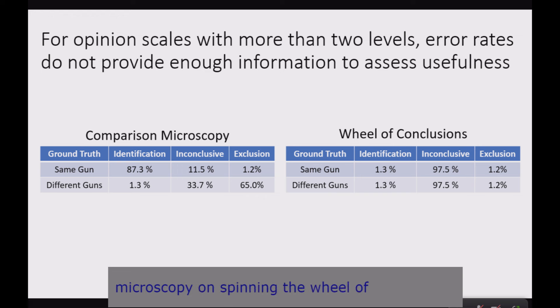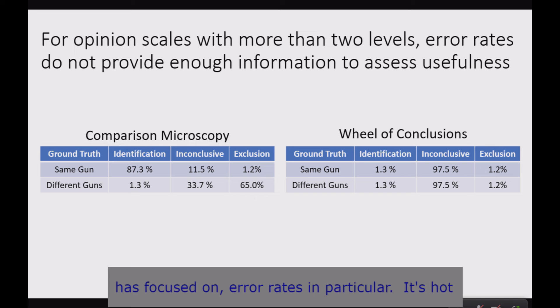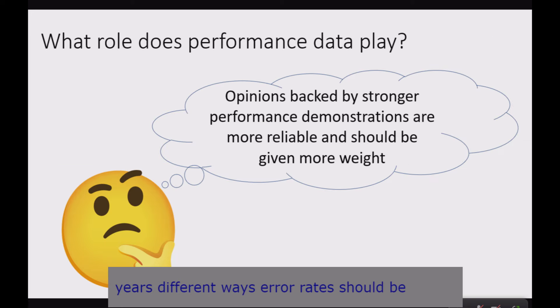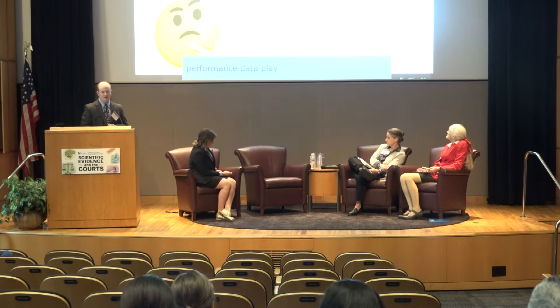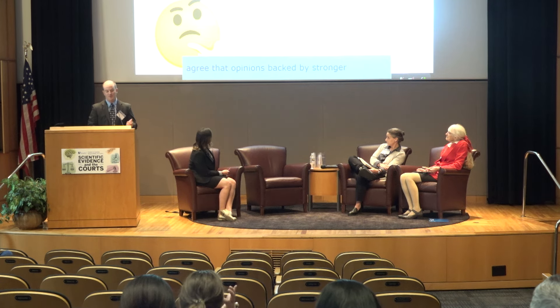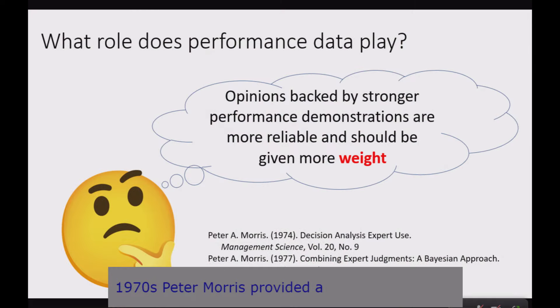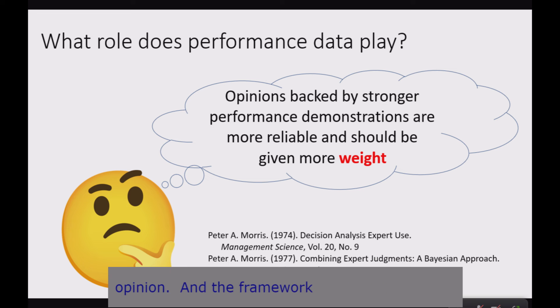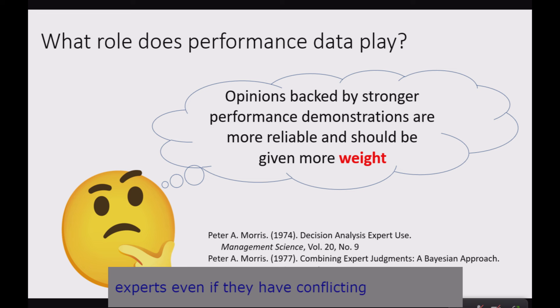Error rates are a portion of the information gathered from validation testing, but there are other details that matter. In particular, we learn the rates of each conclusion type under each scenario — not just how often an exclusion happens among mated comparisons. It is these details that can distinguish whether an examiner is employing comparison microscopy or spinning the wheel of conclusions. But a lot of attention in the community has focused on error rates. Peter Morris in the 1970s provided a framework under Bayesian decision-making about how somebody should respond to an expert's opinion.